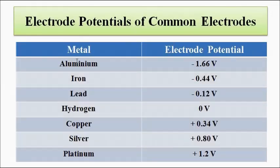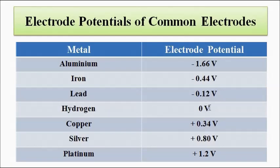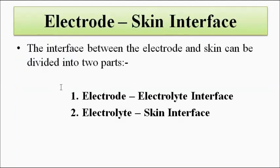The electrode potentials of common electrodes are: aluminium at −1.66 V, iron at −0.44 V, lead at −0.12 V, hydrogen at 0 V (hence used as reference), copper at +0.34 V, silver at +0.8 V, and platinum at +1.2 V. These are the basic concepts associated with the electrode skin interface, specifically the electrode-electrolyte interface.